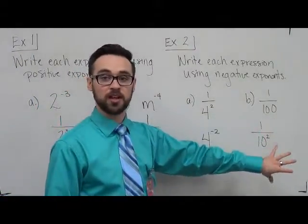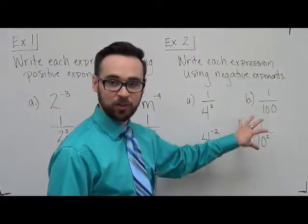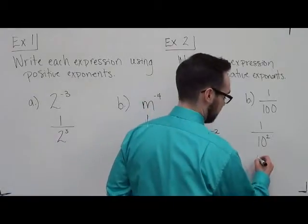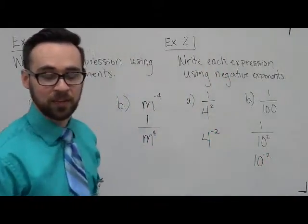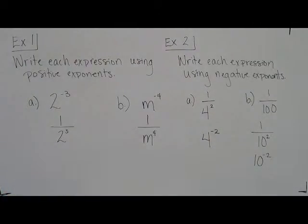So by doing this, we say, oh, 100 is 10 squared. So now we can do the same thing and say that this is going to be 10 to the negative 2 power. So you can go both directions. You can take a negative exponent and make it positive, and you can take a positive exponent and make it negative.